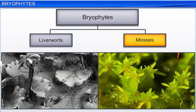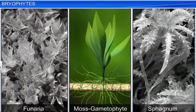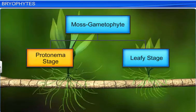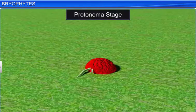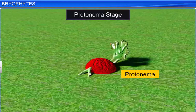Mosses are another type of bryophyte. Funaria, Polytrichum, and Sphagnum are some common species of moss. A moss undergoes several stages in life, wherein the gametophyte stage is the most predominant one. The gametophyte stage has two sub-stages: protonema and leafy stage. In the protonema stage, the spore develops into a protonema, a thread-like chain of cells. The protonema is creeping, green, branched, and filamentous.